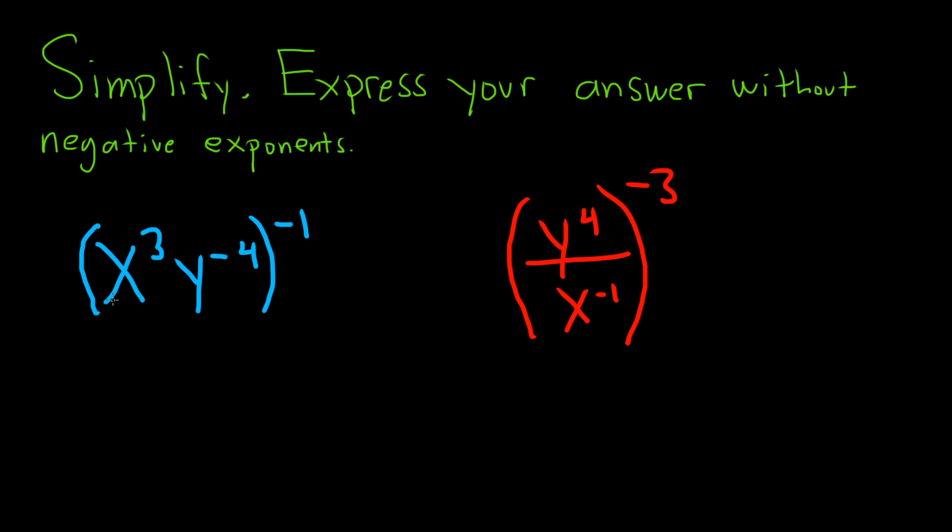So the first one here is x cubed times y to the negative 4, and it's being raised to the negative 1 power. So I'm going to show every single step. Whenever you have something like this, you basically raise each piece to the negative 1 power.